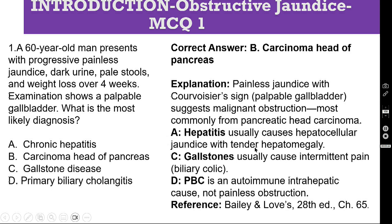A is incorrect because hepatitis usually causes hepatocellular jaundice with tender hepatomegaly. C is also incorrect because gallstones usually cause intermittent pain, and in choledocholithiasis the jaundice will also be intermittent and painful, and the gallbladder is usually not palpable. D is also incorrect — primary biliary cholangitis is an autoimmune intrahepatic cause, not a painless obstruction. Reference: Bailey and Love, 28th edition, Chapter 65.